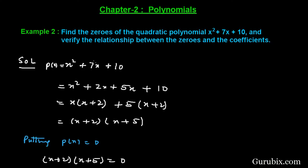Now we shall factorize this quadratic polynomial by using the method of splitting the middle term. The middle term is 7x, and we have to split it such that the sum of its factors equals 7x and the product of the factors equals the product of the first term and the last term. The first term is x squared and the last term is 10, so the product of the first term and last term is 10x squared.